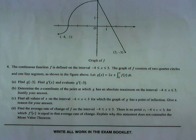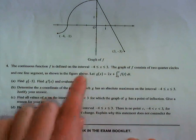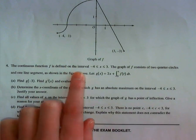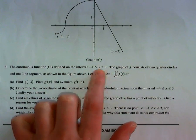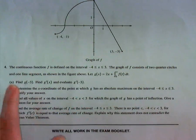Okay, 2011, number 4, and again, no calculator. So here we go. This is the graph of f. It's continuous and defined from negative 4 to 3, that's inclusive. And it consists of two quarter circles and one line segment.